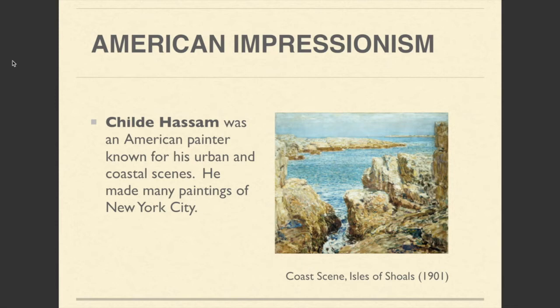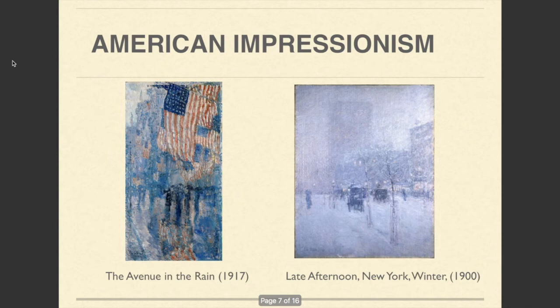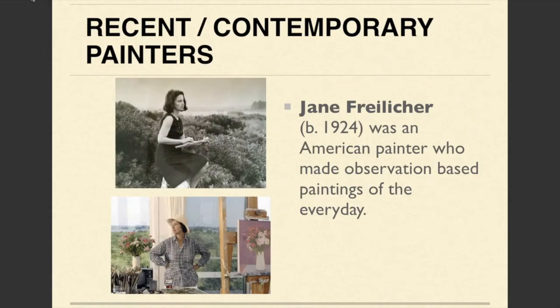Another American Impressionist is Childe Hassam, an artist who painted many urban and coastal scenes as well as many scenes of New York City. Here's one called Avenue in the Rain, and this one's in the Oval Office. Here's one called Late Afternoon, New York Winter.